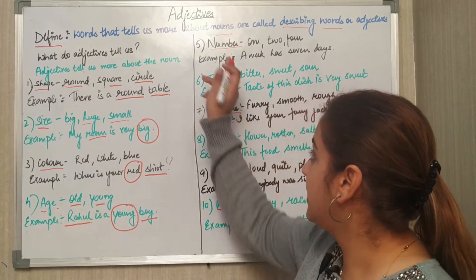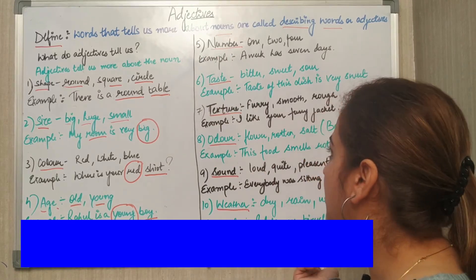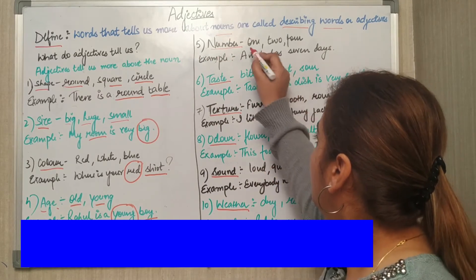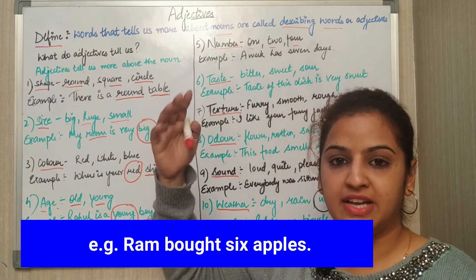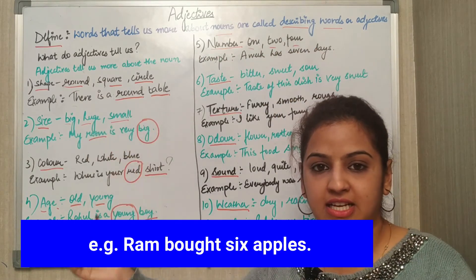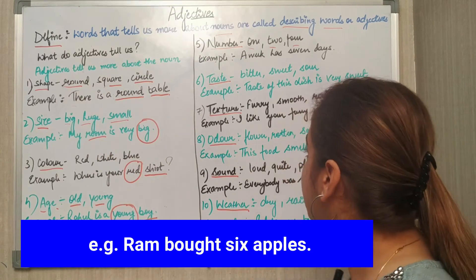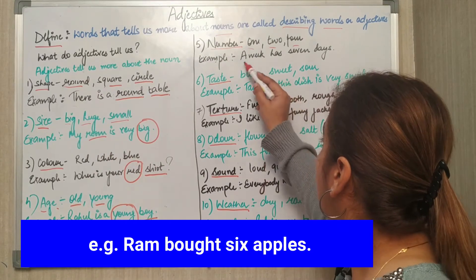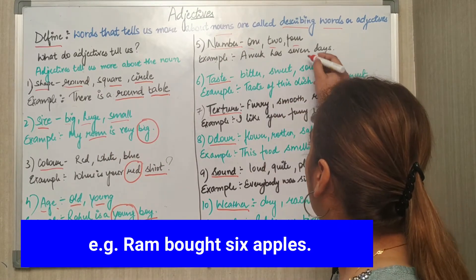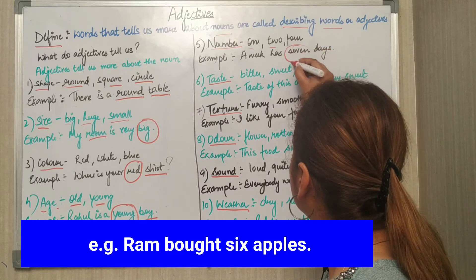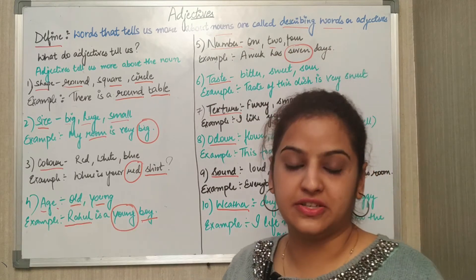Next comes number. A number can be any — one, two, three, four, five, six, seven, eight, nine, ten — anything. Example: A week has seven days. Now here 'seven' is an adjective.